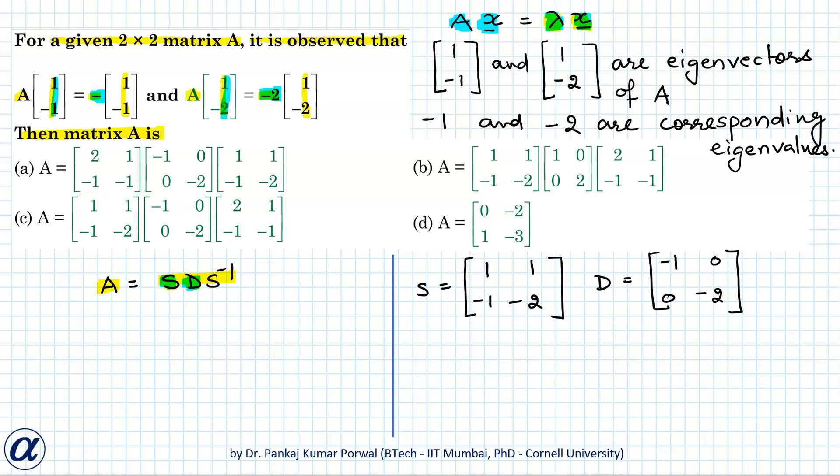As 1 divided by determinant of S, that will be -2 plus 1, and I will have to interchange these two elements and change sign of these two elements. So I get -2, 1 and -1, 1. Here -2 plus 1 will be -1.